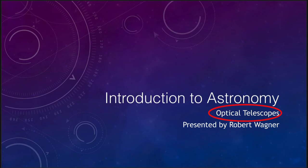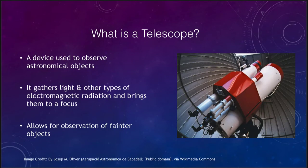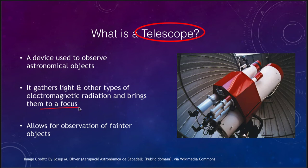Optical telescopes are those that look at visible light. There are different ways to collect visible light from space, and there are other ways we will look at to detect other types of electromagnetic radiation. A telescope is a device that is used to observe astronomical objects — it can gather light and other types of electromagnetic radiation and brings that light to a focus.